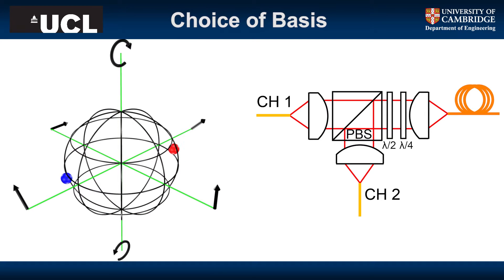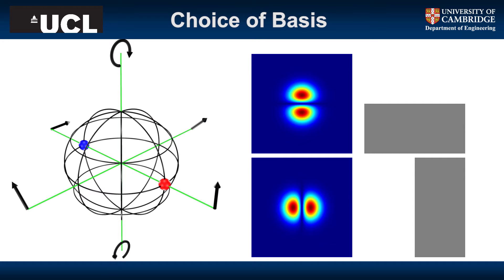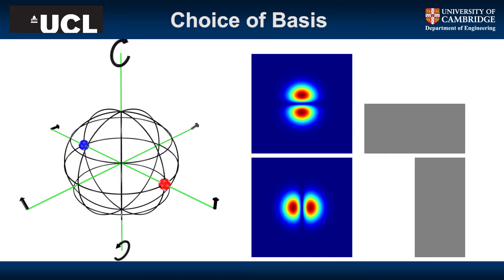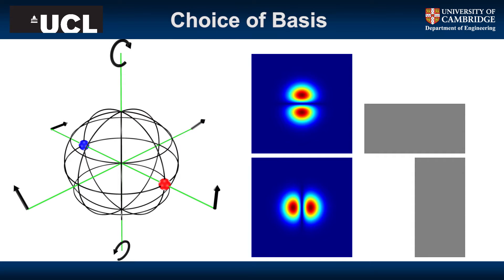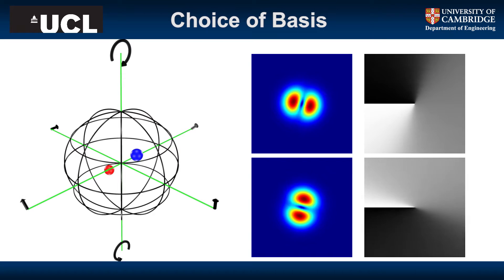With MDM, you've got a similar decision to make. Typically, people — particularly when they're working with phase masks — have used the LP modes, because the LP modes are real-only functions. You can generate them using really simple phase masks: binary phase, low resolution. You don't need a lot of phase control on your beam converter. But they're degenerate and they're going to mix in the fiber anyway, so you can choose any basis your heart desires.